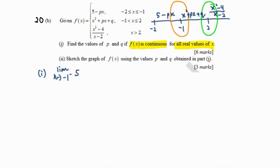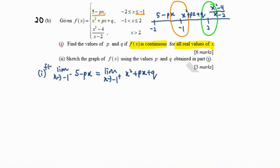We find the limit as x approaches negative 1 from the left-hand side, which is 5 minus px, and it must equal the limit as x approaches negative 1 from the right-hand side, which is x squared plus px plus q. It must also equal the point f(negative 1). We substitute x equals negative 1 and get 5 plus p on the left and 1 minus p plus q on the right.